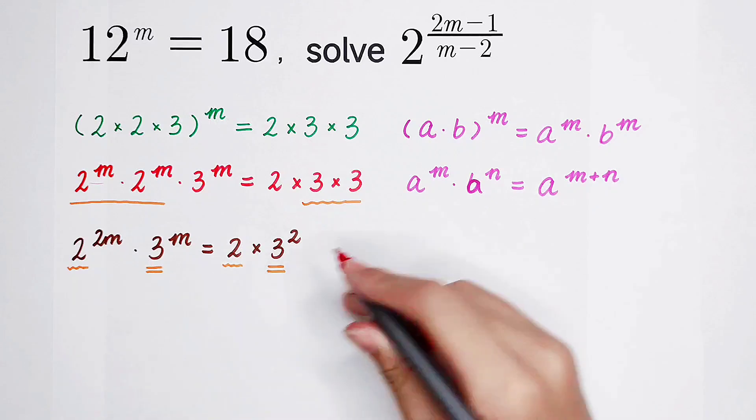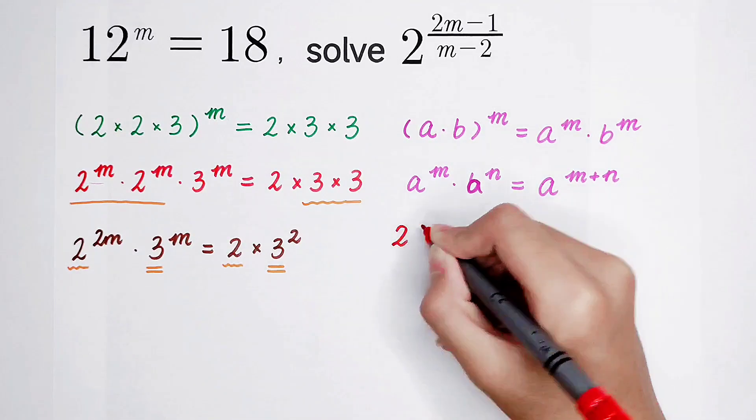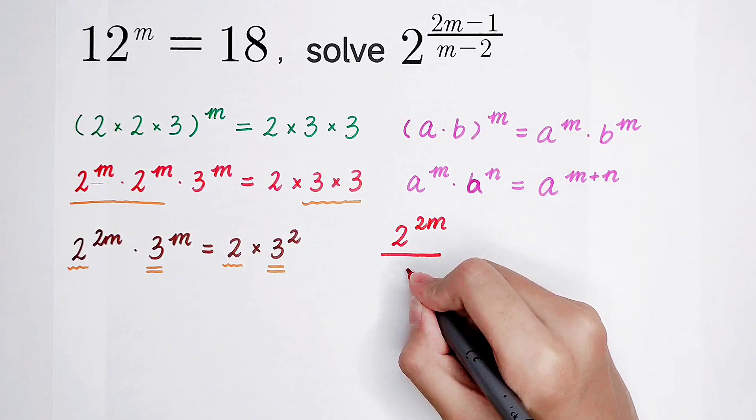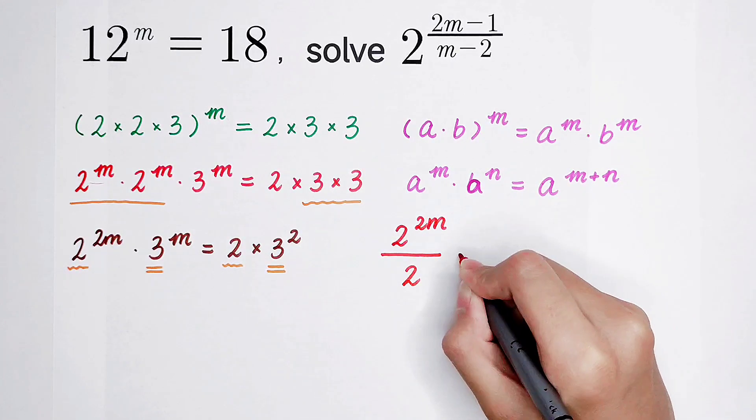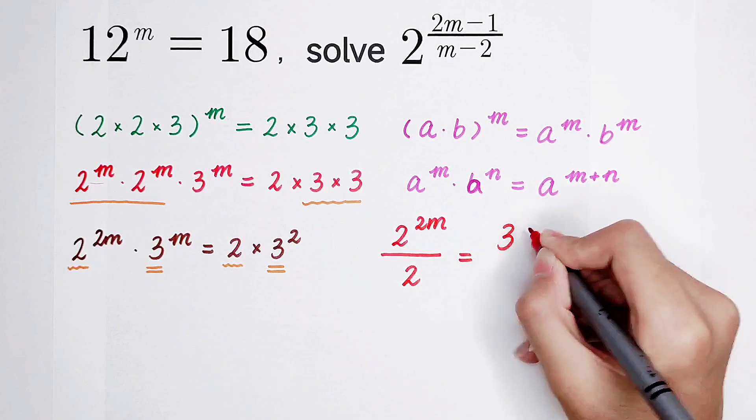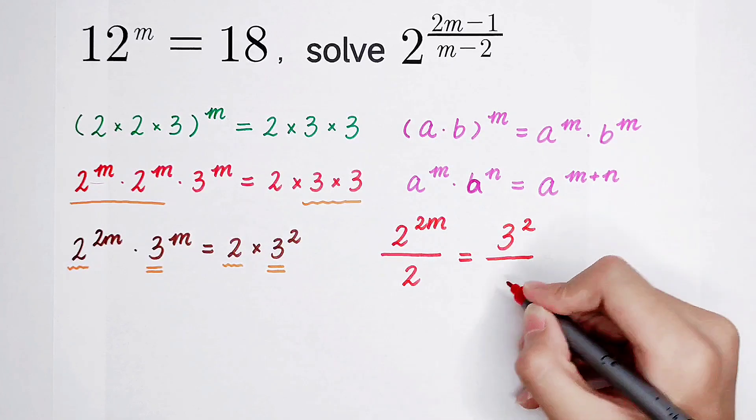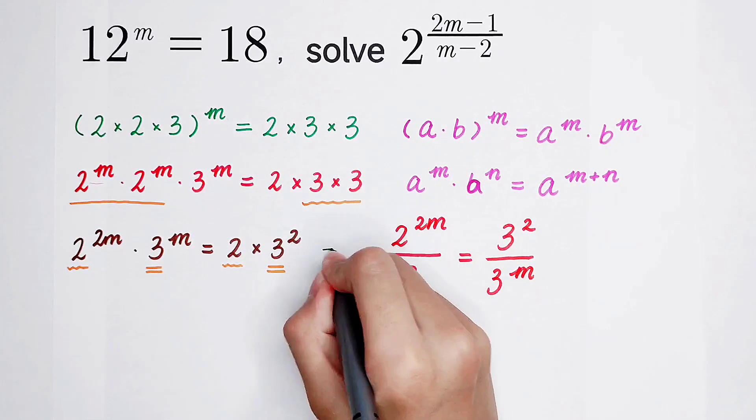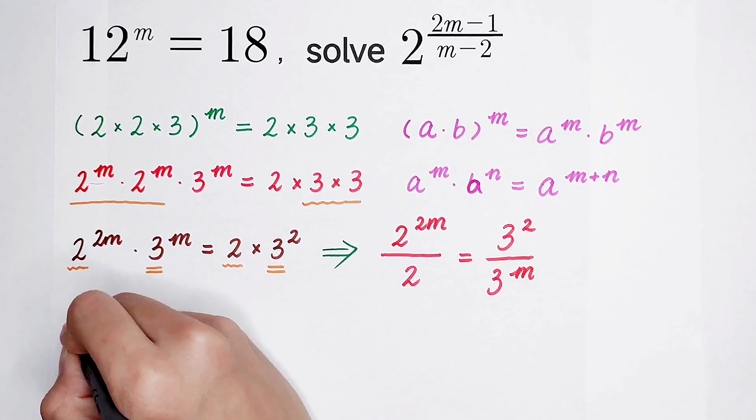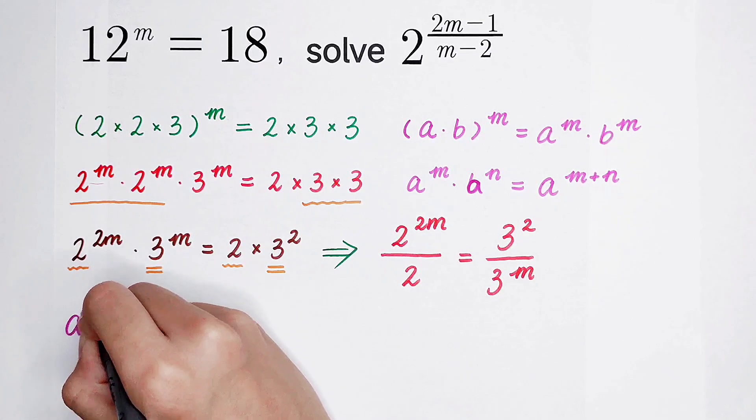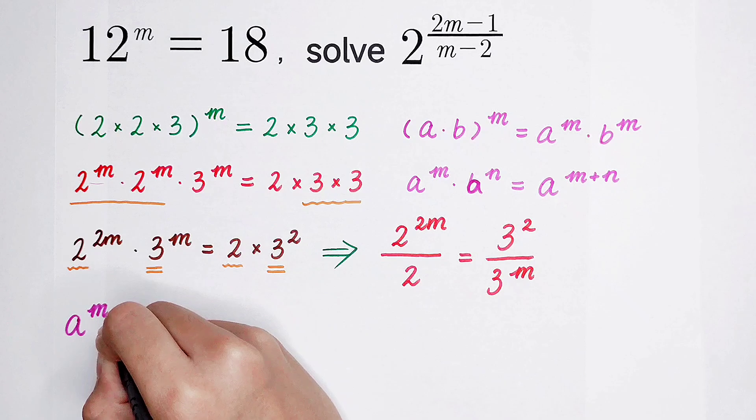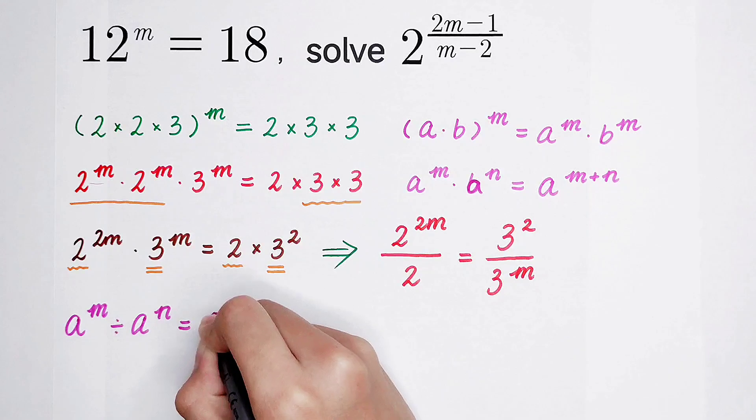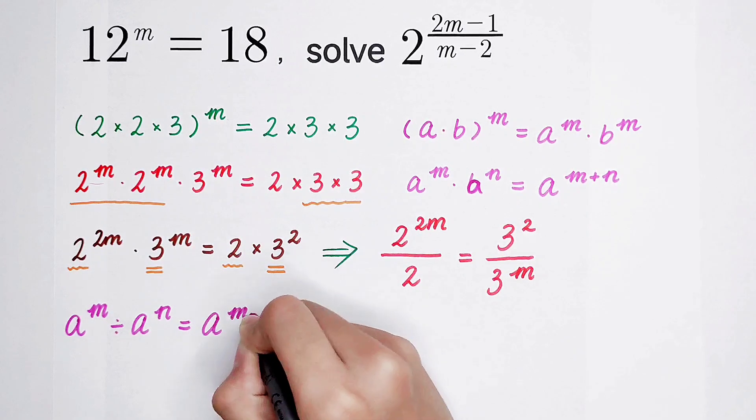So now, it can be turned into 2 to the power 2m divided by 2 is equal to 3 squared divided by 3 to the power m. So from this, I use this formula. a to the power m divided by a to the power n is equal to a to the power m minus n.